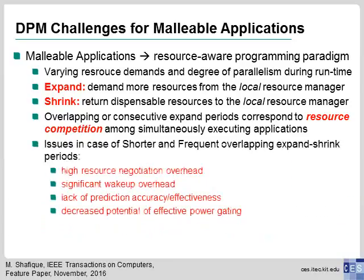There can be different overlapping and consecutive execution phases of expand and shrink that create resource-competing scenarios, as seen in this cartoon example. These unaligned periods of expand and shrink requirements — which can be short or very frequent — and different applications being unaware of each other's expansion phases can lead to various power management problems: high resource negotiation overhead between resource managers and power managers, significant wake-up overhead when cores are power-gated and then suddenly needed, and prediction-related issues.